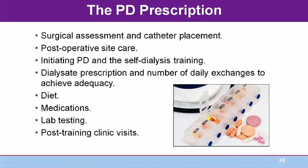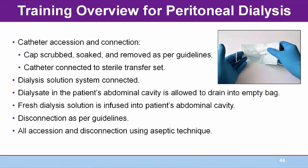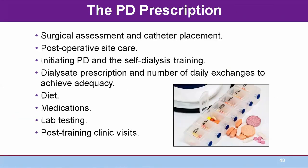In a perfect world all this decision-making takes place before the patient actually needs to begin dialysis, but whatever the circumstances, all care is carefully prescribed with the primary goal of patient safety. Once a patient and the interdisciplinary nephrology team decide on self-care dialysis, a prescription is formulated. The prescription for PD will include placement of the PD catheter, post-op exit care for approximately two weeks, training with the PD catheter starting with small volumes of dialysate, the number of exchanges per day, diet, medications, lab testing, and clinic visits for maintenance care.